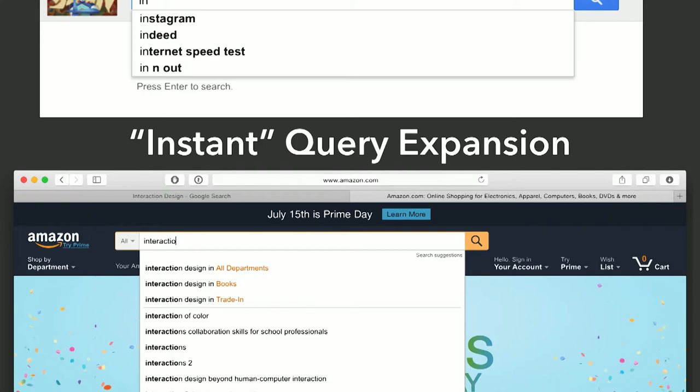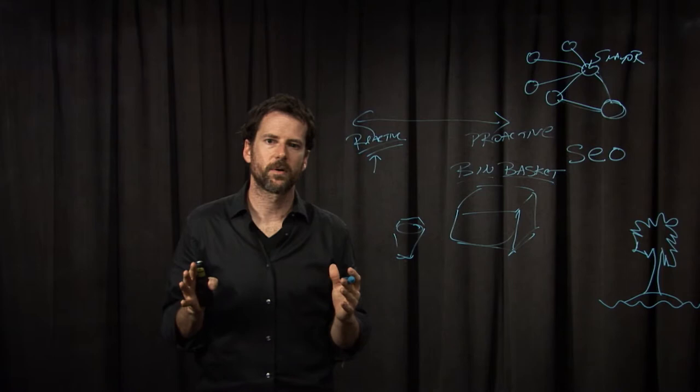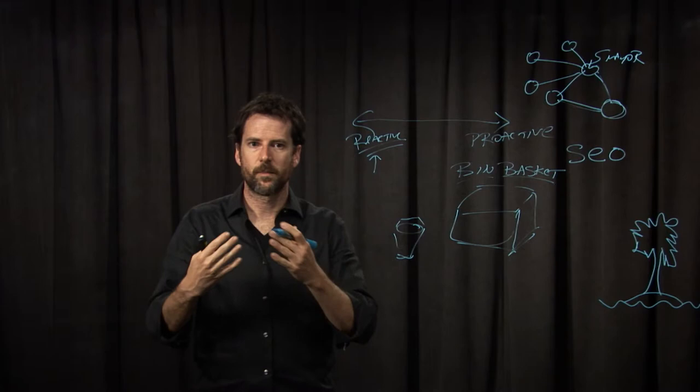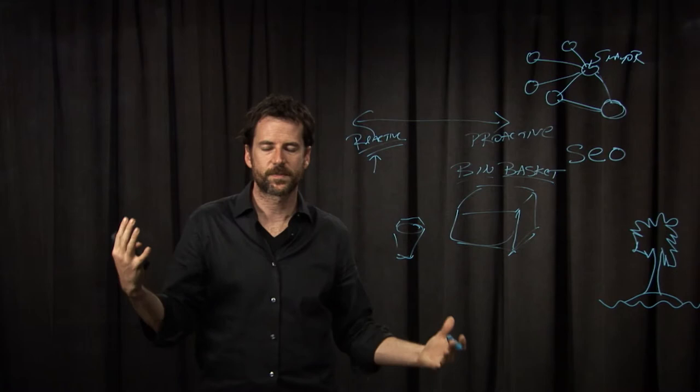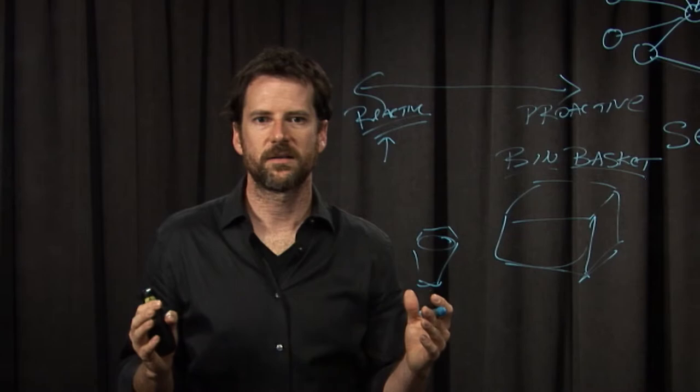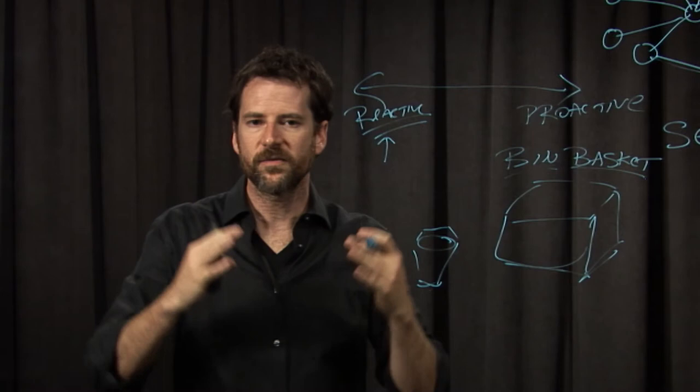One of the most powerful ones to come out relatively recently has been instant expansion as people type. Instant search queries are interesting as a user interface example because they're really good for experts — it saves them keystrokes. They're also really good for novices — it guides you to the space of possibilities. When lots of people search for something, even things like sex scandals, even if they're not real, it reinforces in that instant search expansion.